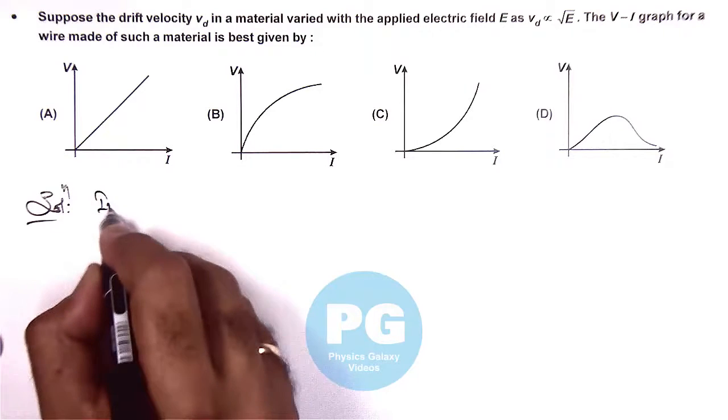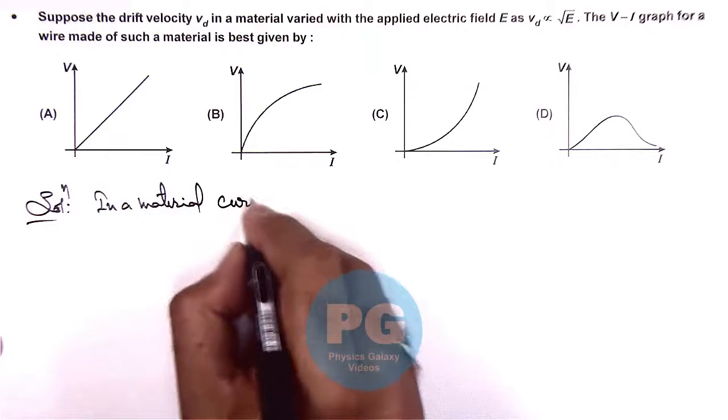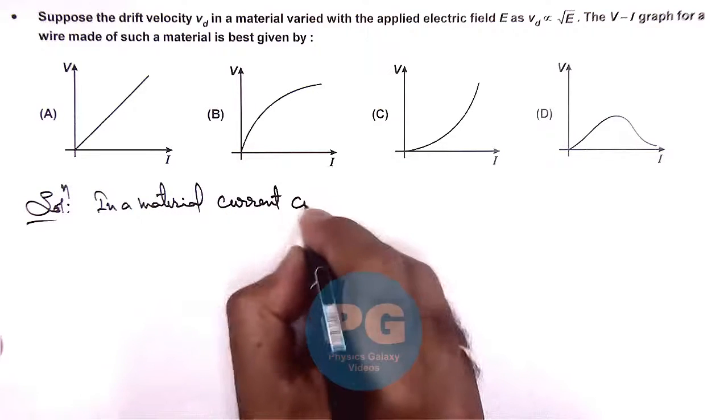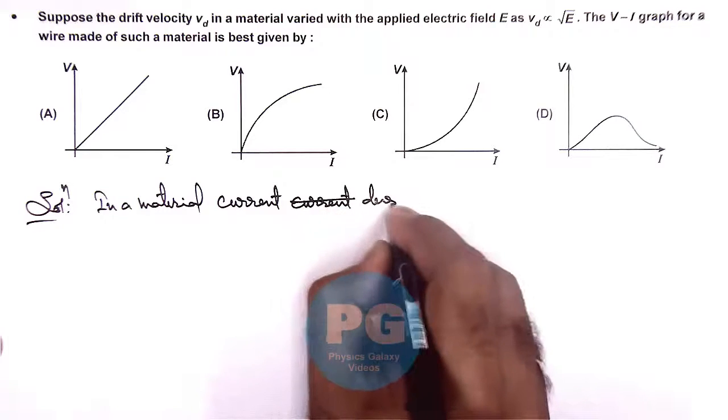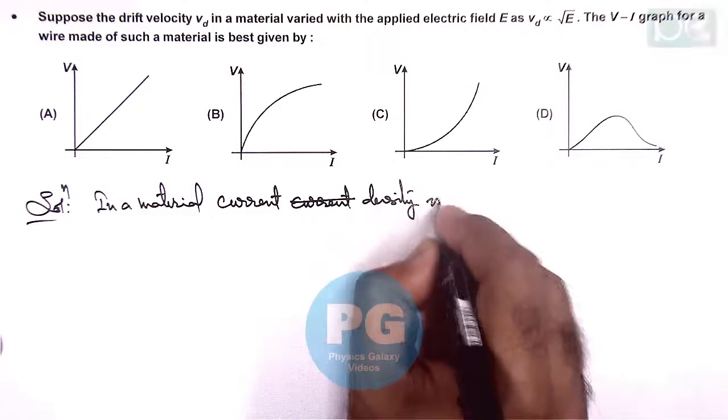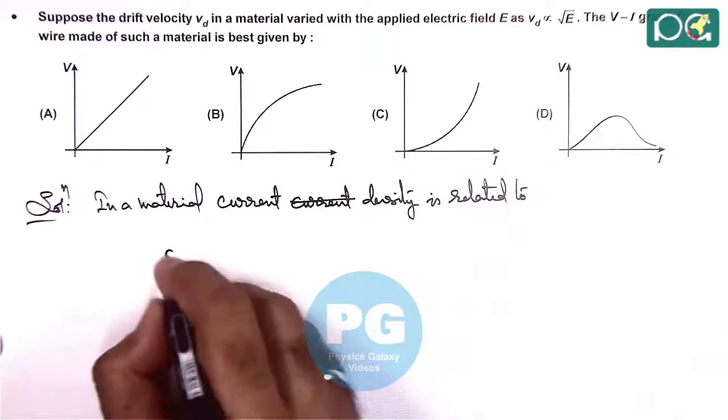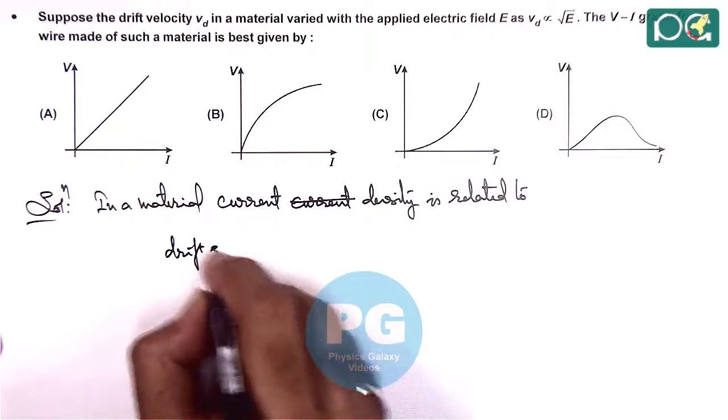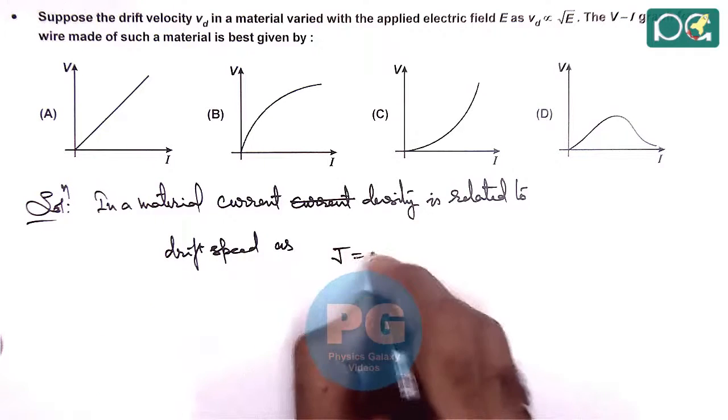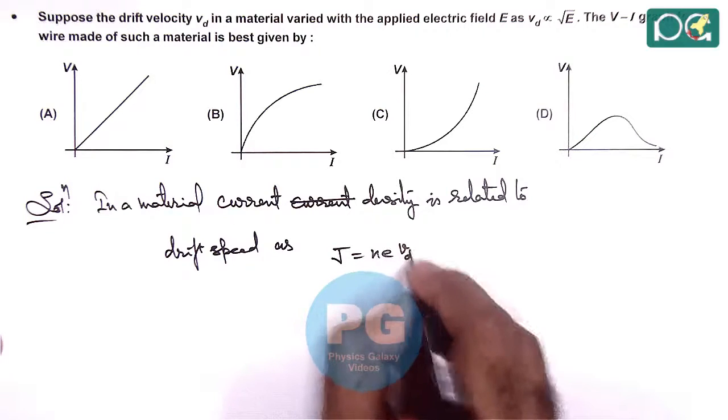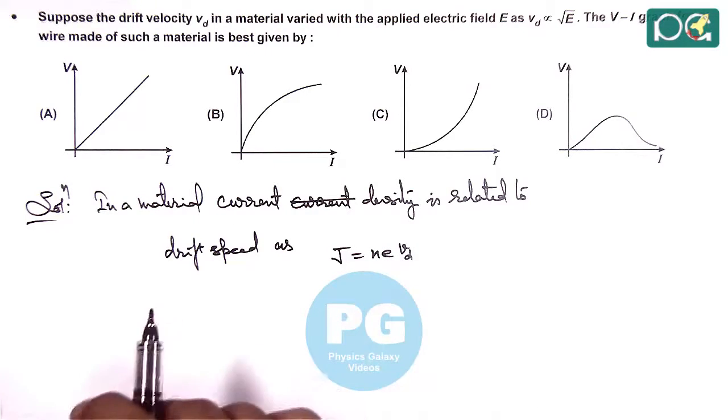in a material, current density is given as, we can write current density is related to drift speed as j equals nqVd, where n is the free electron density, q is the electron charge, Vd is the drift speed.